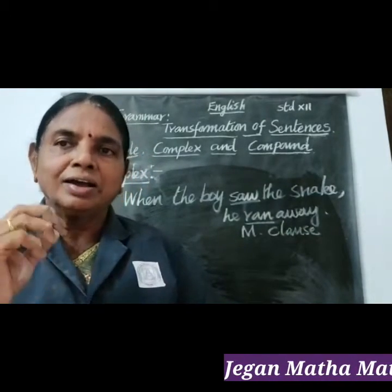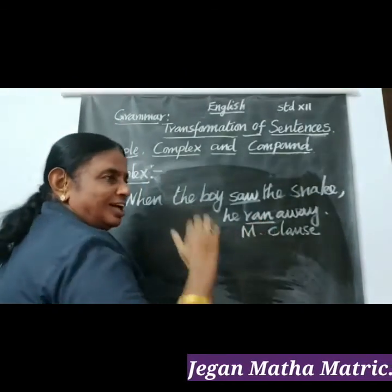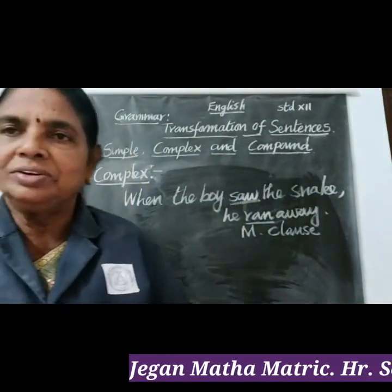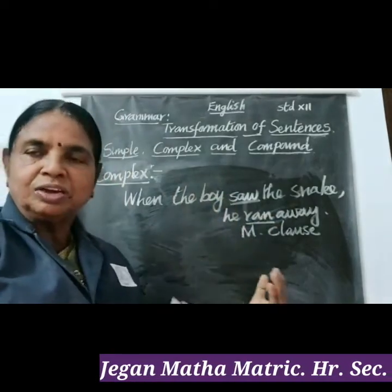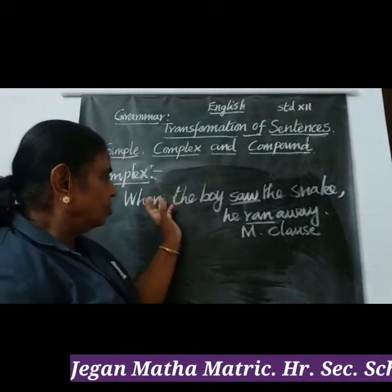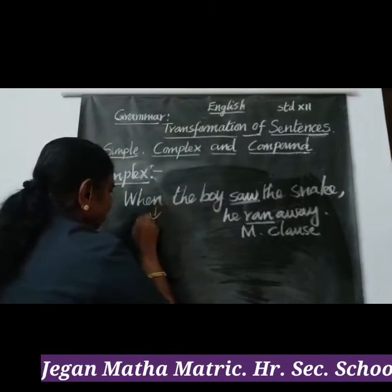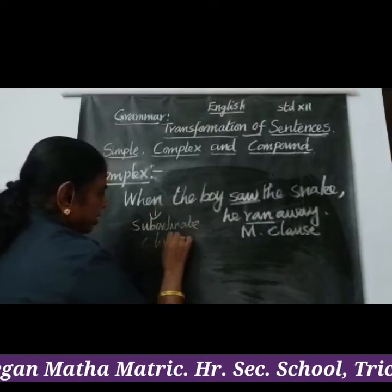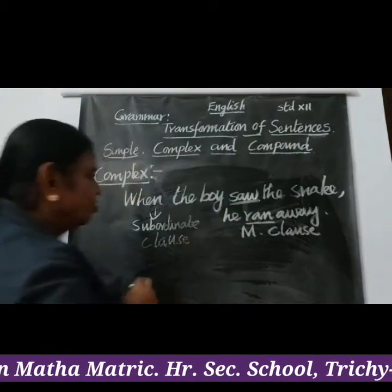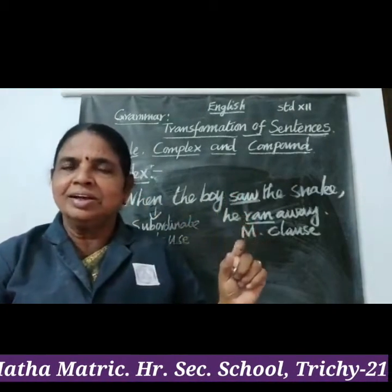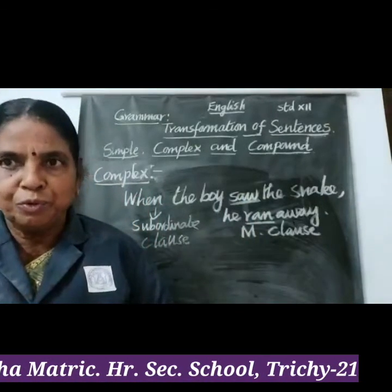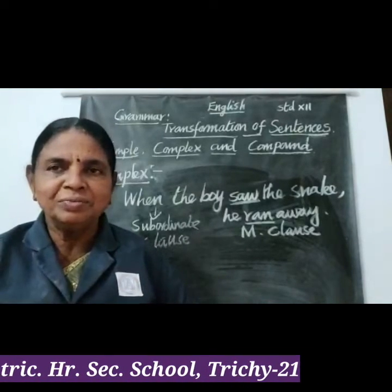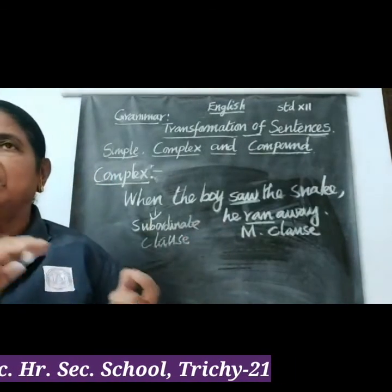A main clause gives complete sense or complete meaning of the sentence. 'He ran away' is complete. But 'when the boy saw the snake' is incomplete — it expects something to join with, so we call it a subordinate clause. 'When the boy saw the snake' is the subordinate clause, and 'he ran away' is the main clause. A complex sentence has one main clause and one or more subordinate clauses.